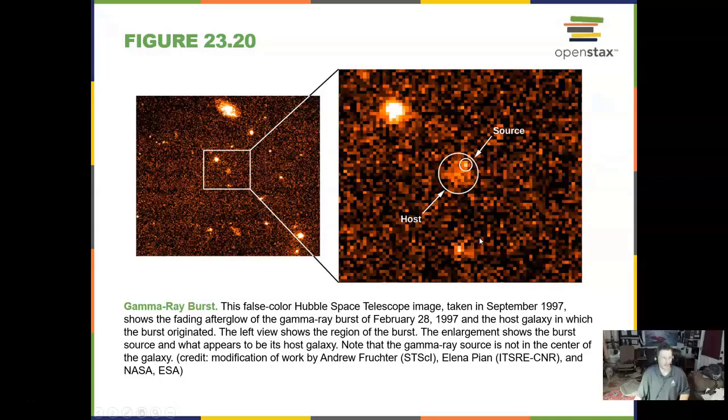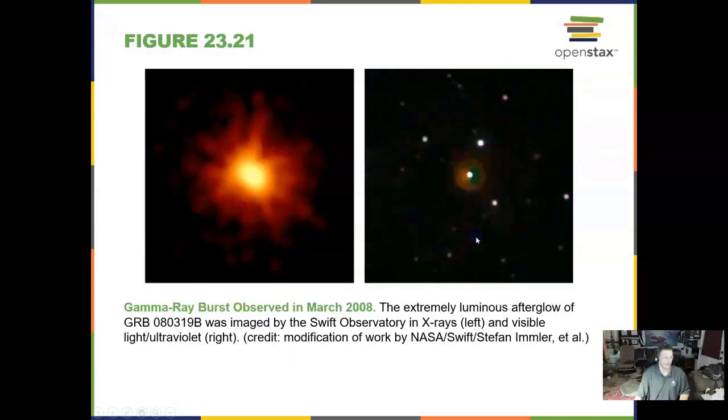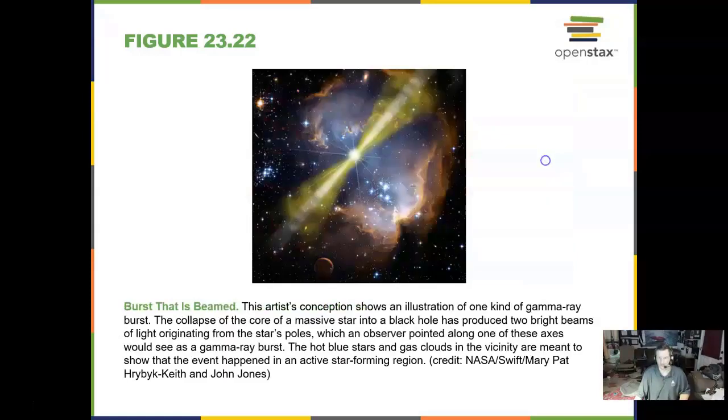A gamma ray burst comes from the very edge of the universe, and we can see those again in these images. In 2008, this gamma ray burst was observed by our SWIFT Observatory in X-rays. Some of these bursts are beamed out. We call these gamma ray bursts, or GRB.